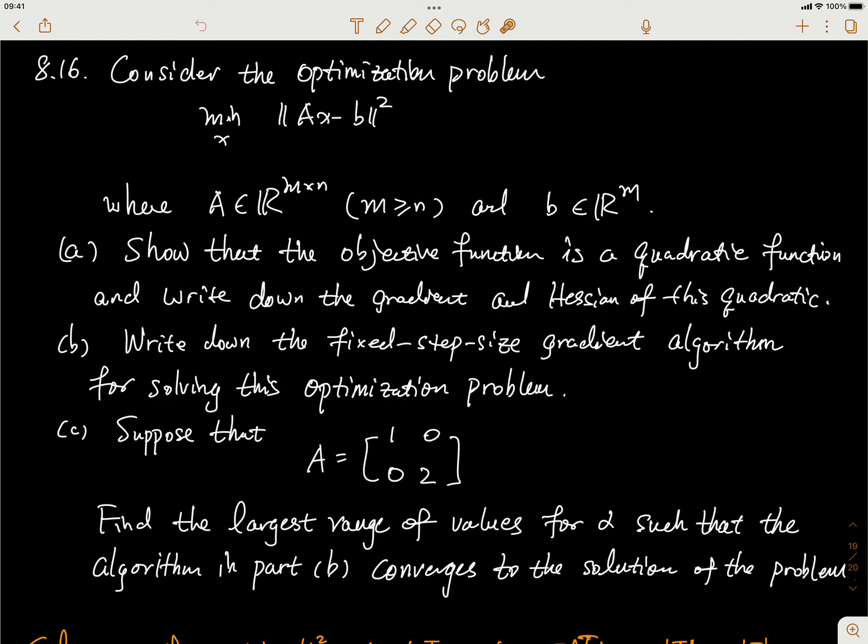Okay, problem 8.16. Consider the optimization problem with norm squared ||Ax - b||² as an objective function.